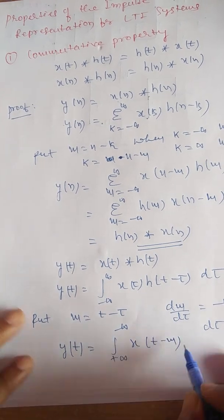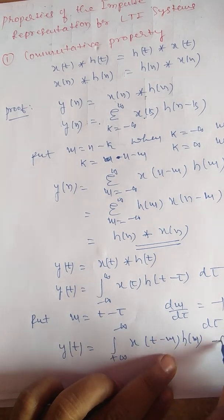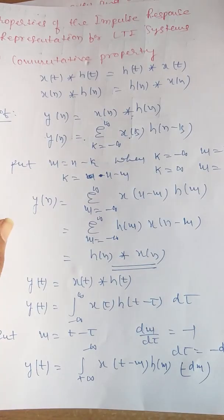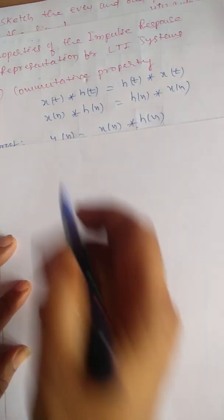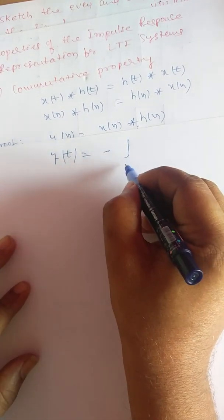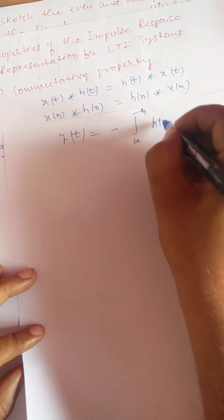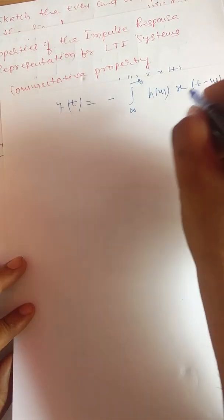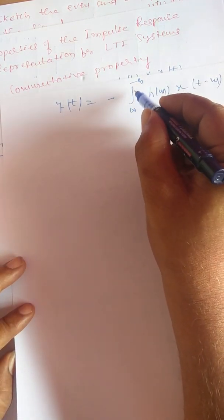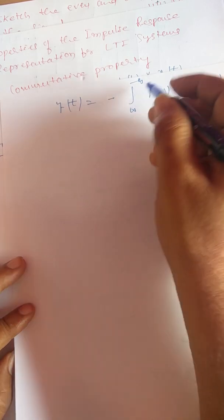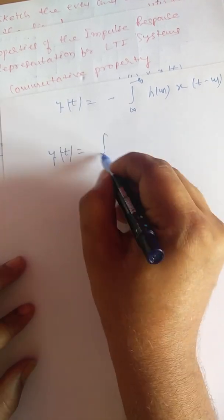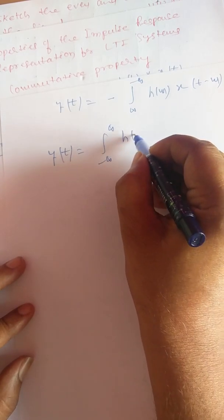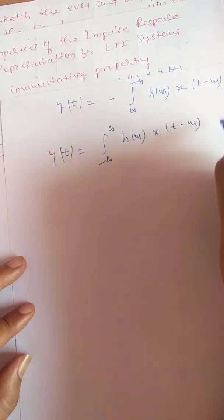Since τ equals t minus m, we get x(t minus m) into h(m) into minus dm. This can be written as y(t) equals minus times the integral from plus infinity to minus infinity of h(m) into x(t minus m) dm. Changing the integration limits, the minus outside and the reversed limits produce a plus, giving the integral from minus infinity to plus infinity of h(m) into x(t minus m) dm.